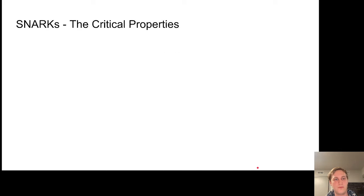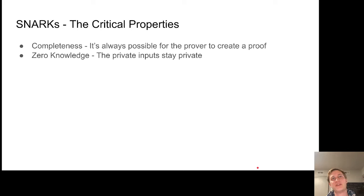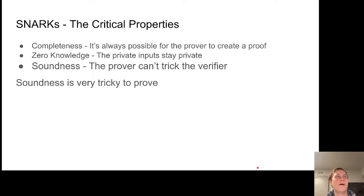The critical properties of a SNARK are completeness, zero knowledge, and soundness. Completeness means it should always be possible for the prover to create a proof when one exists. Zero knowledge means the private inputs stay private. And the real kicker is the soundness property - it shouldn't be possible for a prover to trick a verifier into thinking a proof exists when no proof actually exists. Soundness is really the hardest part to prove, and it's where most mistakes are made, because soundness involves a lot of complicated mathematical justification. Most of the paper space is dedicated to proving that soundness is correct.